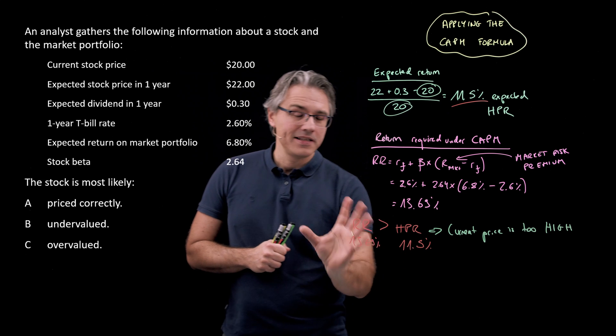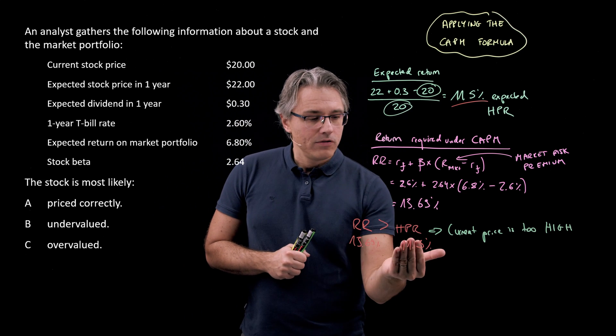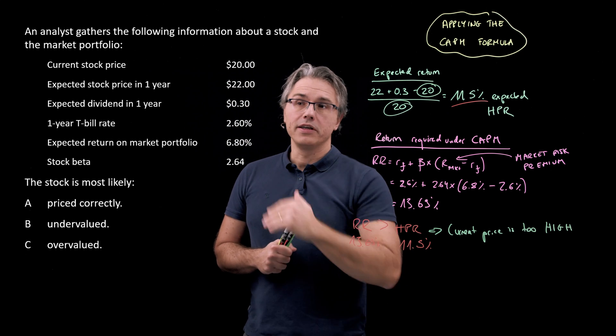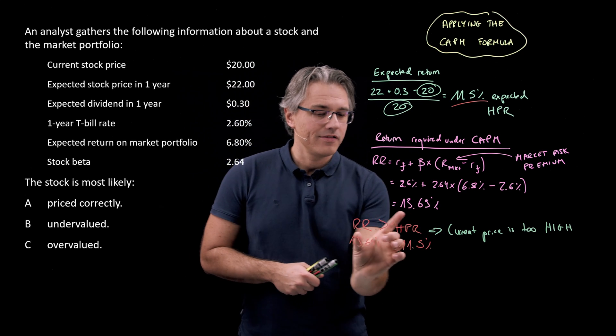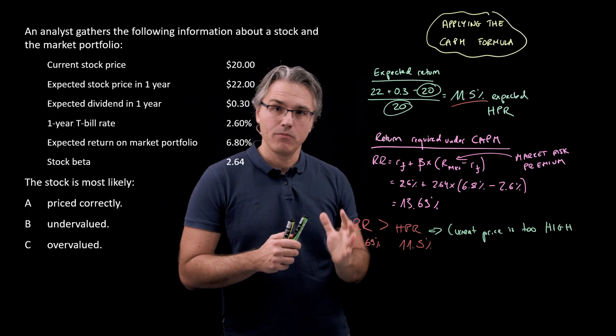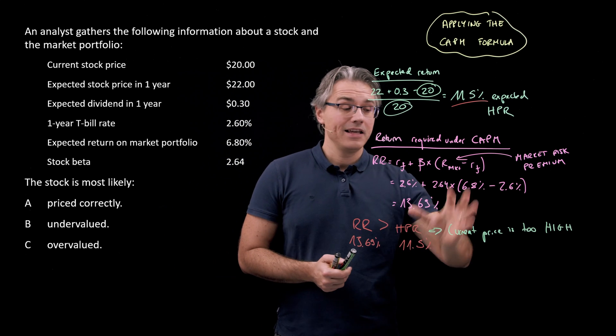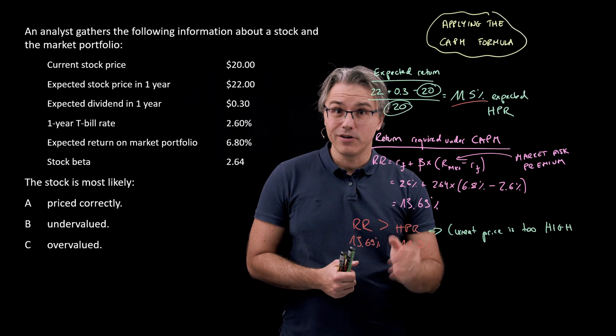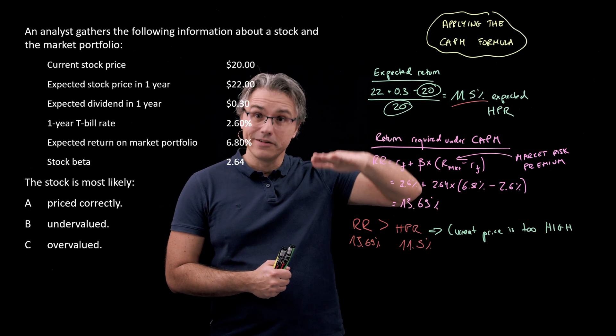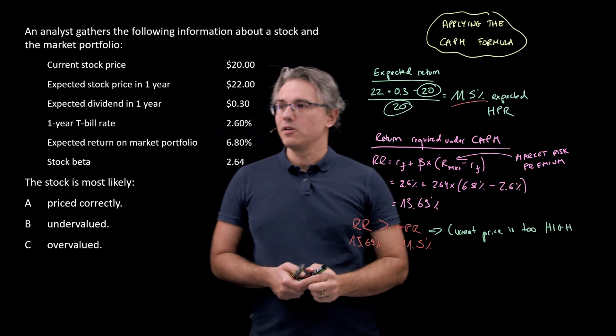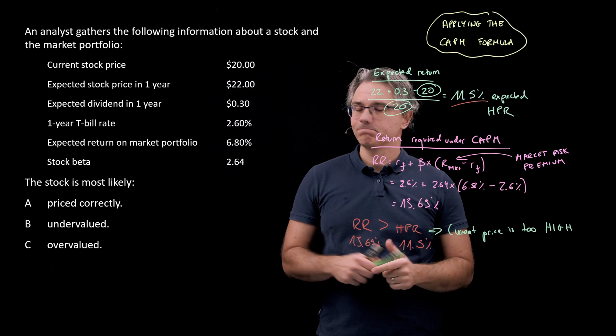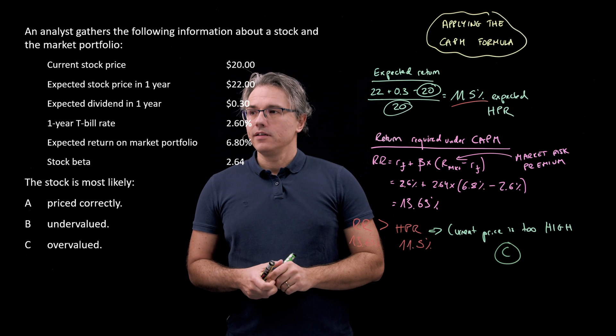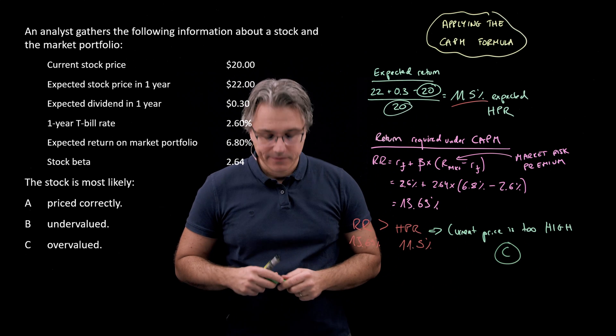So if you see this relationship—holding period return or expected return, given the data that you're going to be given in the question, is lower than what the CAPM model says is required—the conclusion is the current price is simply too high, making the yield too low. So answer C. This stock is most likely overvalued.